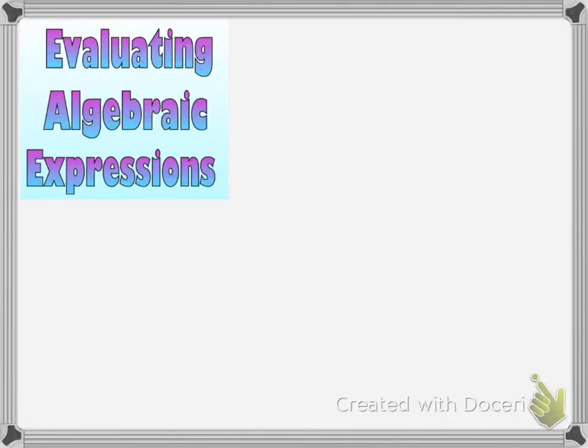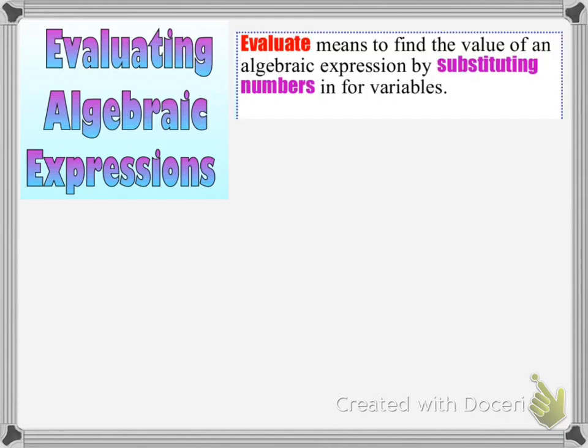Let's take a quick look at how to evaluate algebraic expressions. First, let's make sure we know what some key words mean. When you're asked to evaluate, it means we want to find the value of an algebraic expression by substituting numbers in for the variables. So when we see an expression such as 4x minus 3y squared, we're going to take the given values of our variables and substitute them in. We're told that x equals 3 and y equals negative 5.